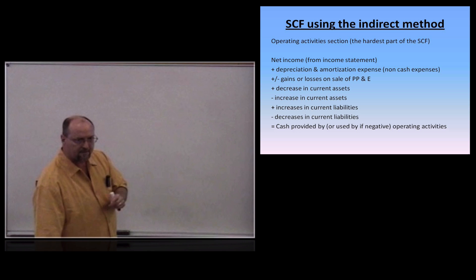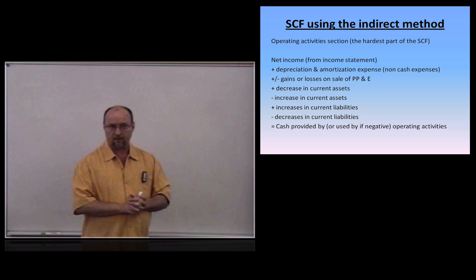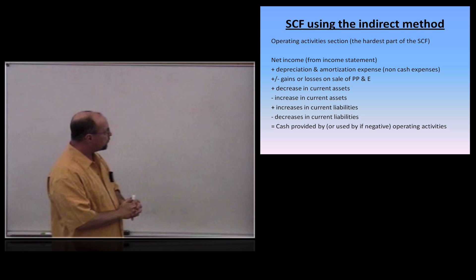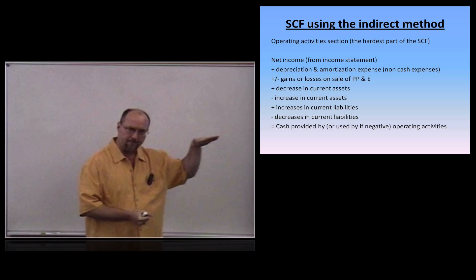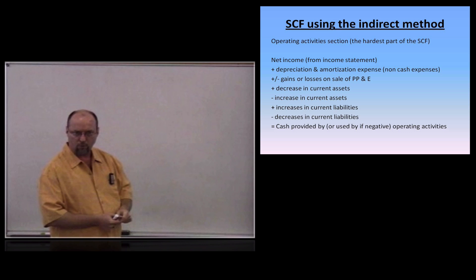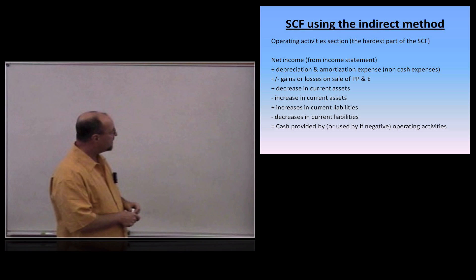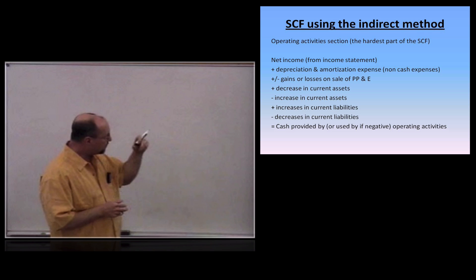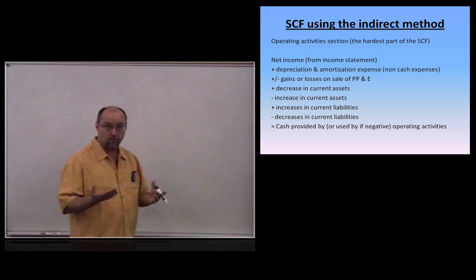The hardest part of the statement of cash flows is preparing the operating activity section. We start with net income right off the income statement and convert it to cash from operations. The first adjustment involves depreciation — notice that we add back depreciation expense and amortization expense. Why do we do this? Let's look at an example.